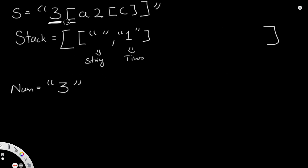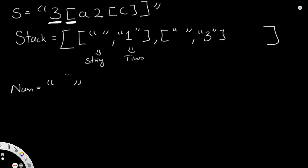Next we have an opening bracket. When we see an opening square bracket, it means the start of an encoded series, so we push a new element onto the stack. We push an empty string paired with the current number — in this case, 3. After pushing, the 'num' variable gets reset to an empty string.